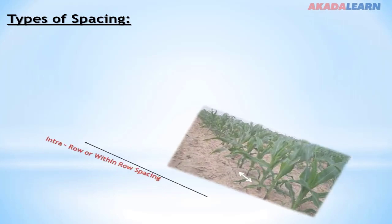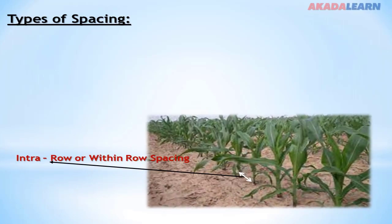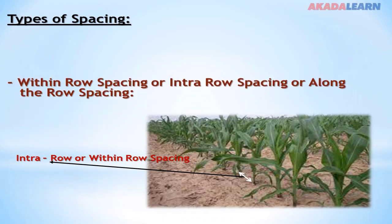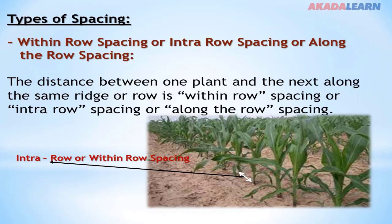Types of spacing. We have the intra-row or within the row spacing. From the diagram here, we can see there is a row of corn. The space within the row is known as the intra-row or within the row spacing. The distance between one plant and the next along the same ridge or row is within the row spacing or along the row spacing.